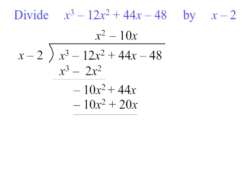As soon as you've written something underneath, you put a line under it and subtract. Negative 10x squared subtract negative 10x squared gives us 0. And 44x take 20x gives 24x. Then bring down the next term and write it alongside.